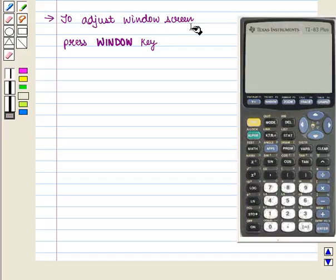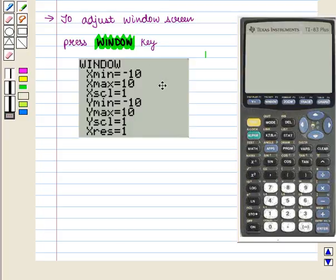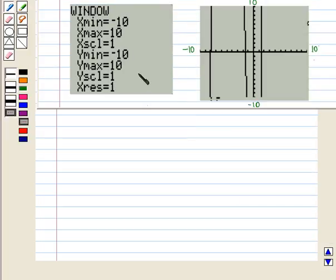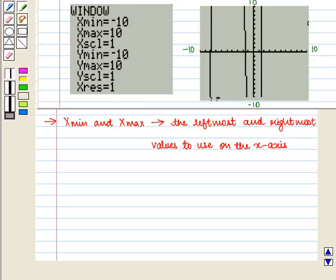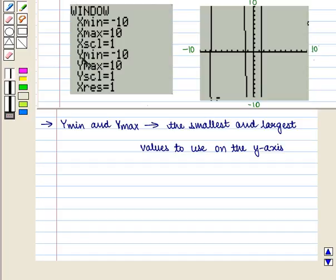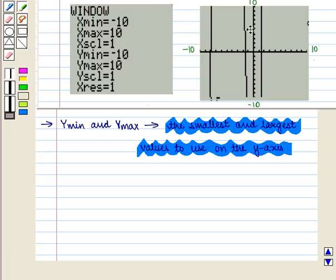To adjust window screen we press window key and this screen will be displayed. Let us discuss the window settings and their meanings. Now Xmin and Xmax are the leftmost and rightmost values to use on the x-axis. Similarly Ymin and Ymax are the smallest and largest values to use on the y-axis.